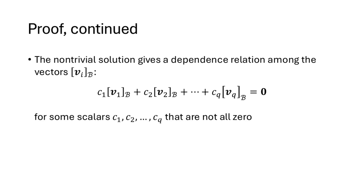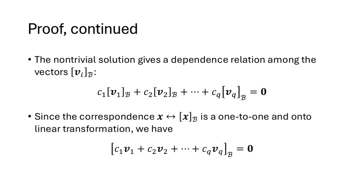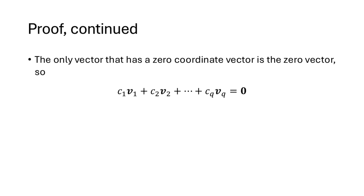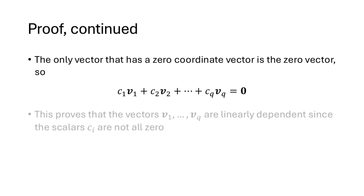That non-trivial solution gives us a dependence relation among the coordinate vectors of the Vs: C1 times the coordinate vector of V1 plus C2 times the coordinate vector of V2 through Cq times the coordinate vector of Vq equals the zero vector, with those scalars not all zero. Because the correspondence between vectors and coordinate vectors is a one-to-one and onto linear transformation, we can rewrite this as the coordinate vector of (C1·V1 + C2·V2 + ... + Cq·Vq) equals the zero vector. This means that vector's coordinates are all zeros, so the vector itself is the zero vector. Since the C scalars are not all zero, this is a dependence relation for the V vectors, which means the Vs are linearly dependent.